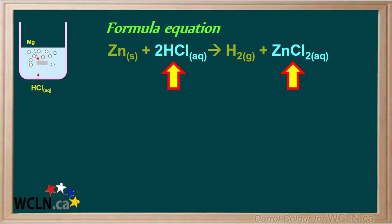These are both soluble compounds, so in an aqueous solution they actually consist of individual ions. We can dissociate them both into individual ions. When you're dissociating compounds, always have your ion table handy so you can check that all ions have their correct charges.